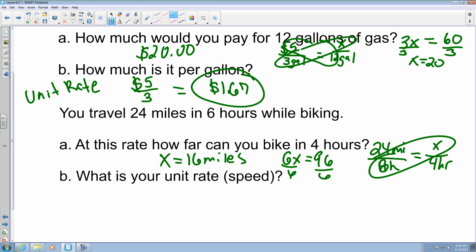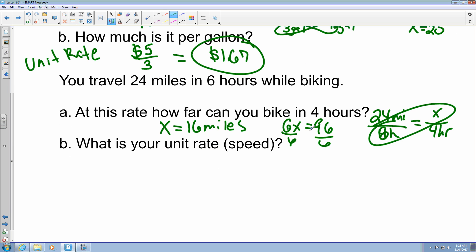The next thing, they want to know what is your unit rate and speed. So, that means that you can either write it as 24 over 6 as the ratio, or you can do 16 over 4. It's still going to give you the value of 4. So, basically, you're going 4 miles for 1 hour.